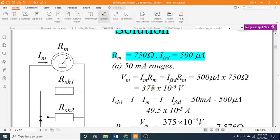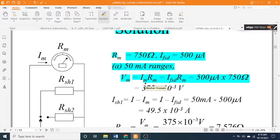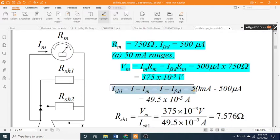Part (a) 50 milliamp range: First calculate Vm. Vm equals Im times Rm equals FSD times Rm equals 500 microamps times 750 ohms equals 375 times 10 to the minus 3 volts.